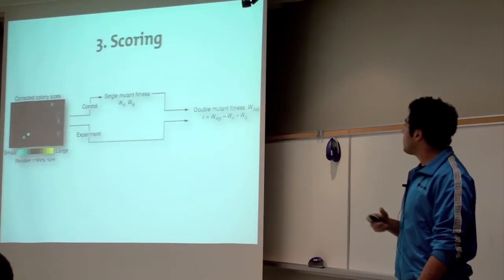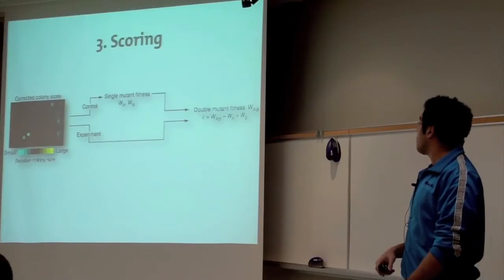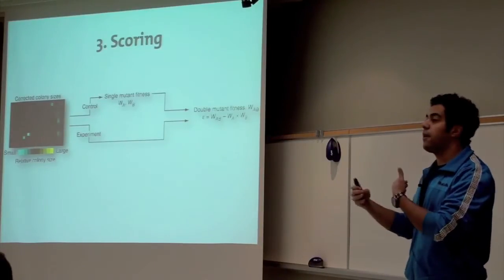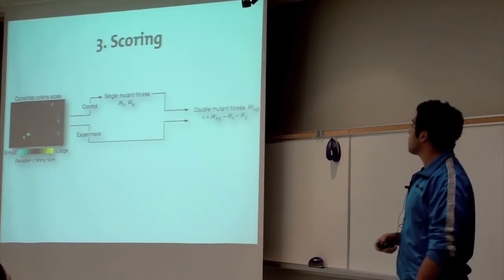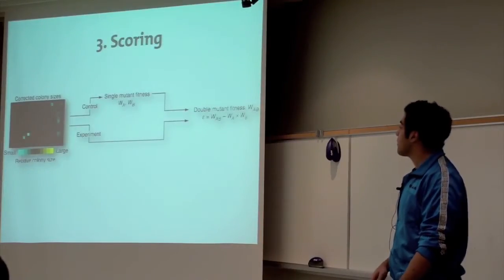The third step is really once you have these double mutants, what we call them, and single mutant screens, you want to really compare and contrast both these screens to be able to identify what we call genetic interactions. So these are really the three main steps in processing these screens.